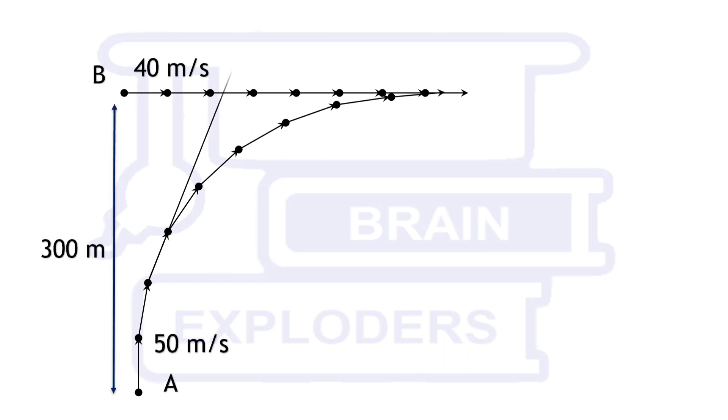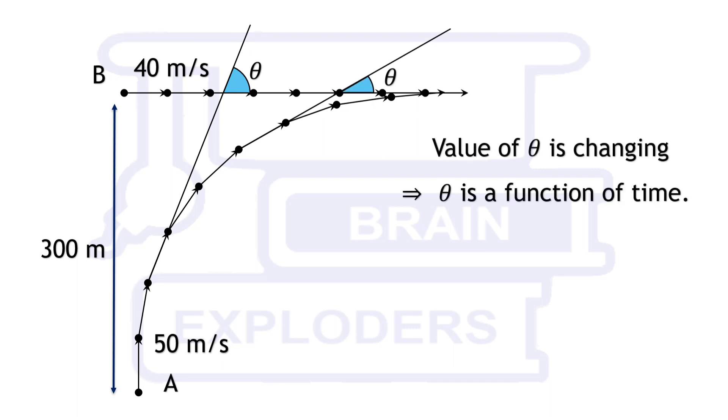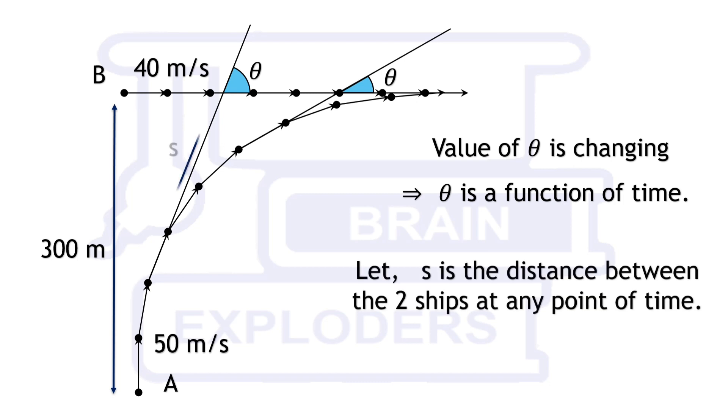Angle between the directions of both the ships is also not a constant and therefore it can be taken as a function of time. Similarly, shortest distance between both the ships is also decreasing and hence it is also a function of time.